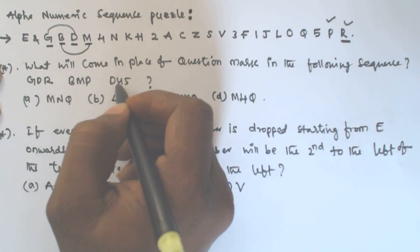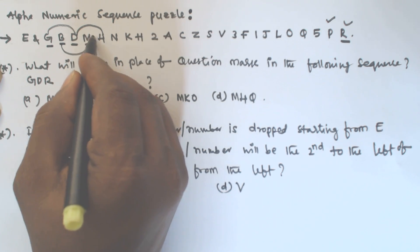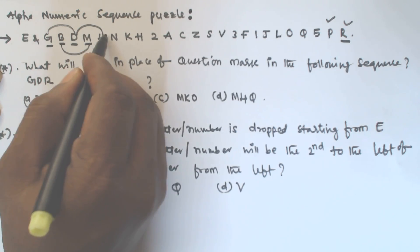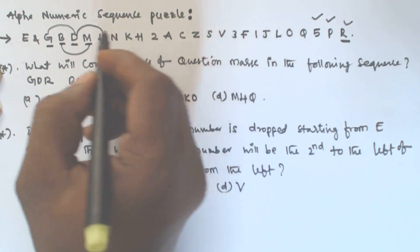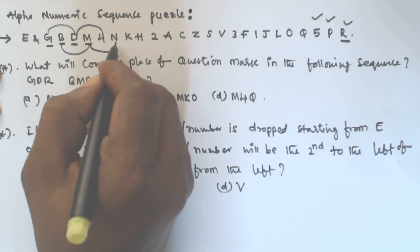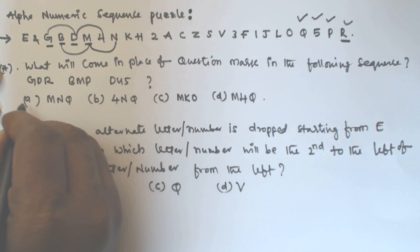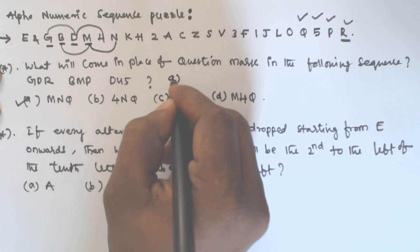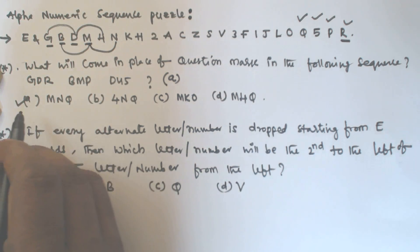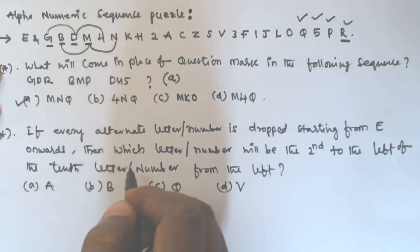Next, D 4 5 follows the same pattern. Then the next group starts with M — skipping one letter gives N, then skipping one gives Q. So the answer is M N Q, which is option A. The answer for the first question is option A.